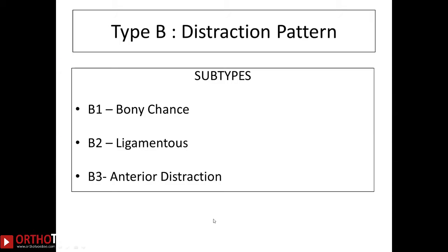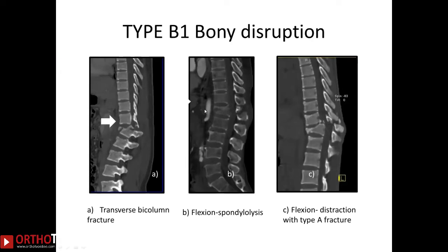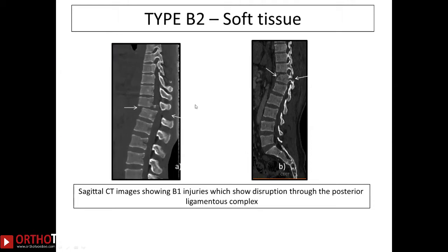A flexion distraction injury can run through the bone — the fracture line runs through the mid part of the vertebral body and exits through the spinous process; this is a classic Chance fracture. Alternatively, a flexion distraction injury can be purely ligamentous, running through the disc and through the PLC. A classic sign on CT is an increase in the interspinous distance. An avulsion fracture of the posterior annulus is another sign of flexion distraction. The fracture can exit through the bone but extend into soft tissue, representing a soft tissue component of the injury.